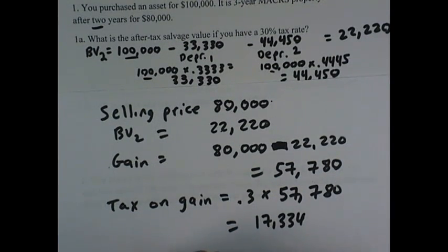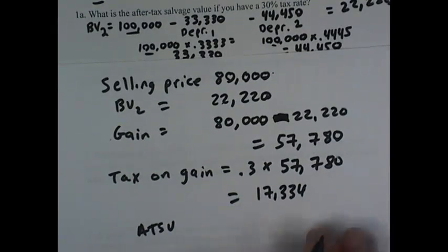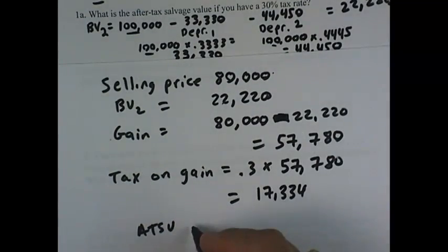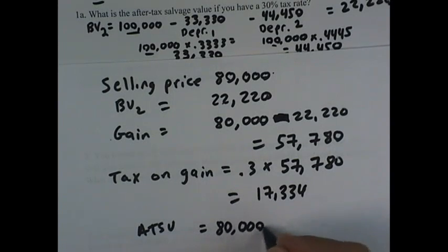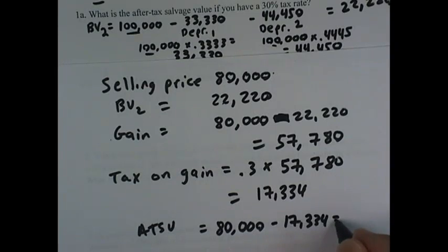The after-tax salvage value would be the $80,000 we're going to get from the sale minus the taxes we pay the government on the gain. So the after-tax salvage value is $62,666.